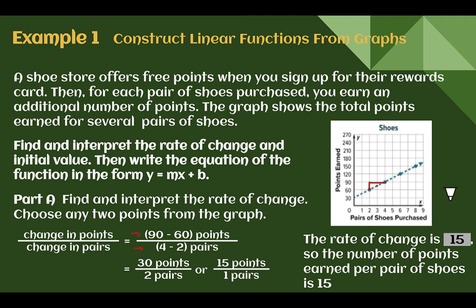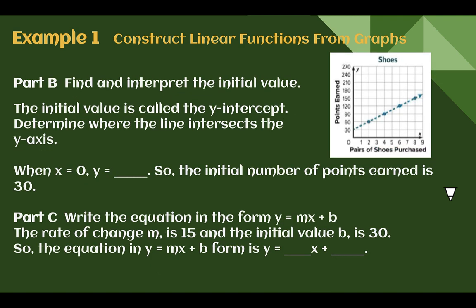This is the number of points you earn per pair of shoes. Next, let's find and interpret the initial value. Our graph crosses at 30 when x equals 0, so the initial value is y equals 30 — meaning when they open the card, the initial points earned was 30. Plugging these into y equals mx plus b, our rate of change m is 15 and our initial value is 30, so our equation is y equals 15x plus 30.